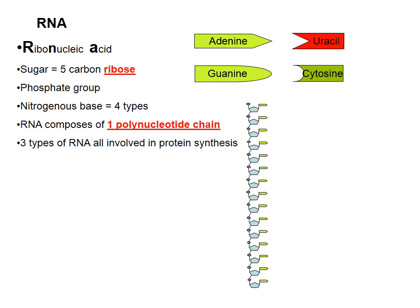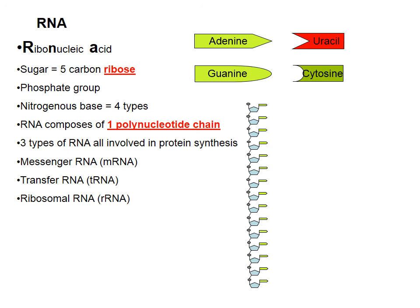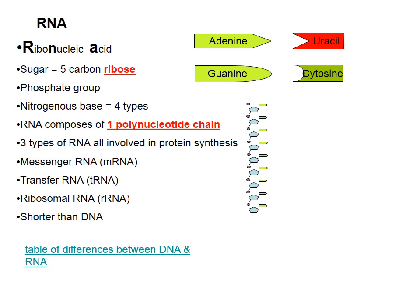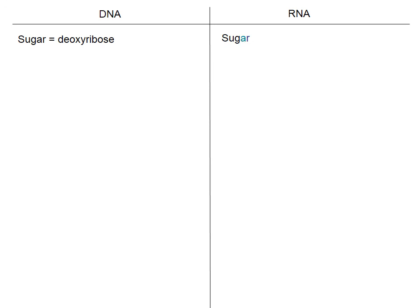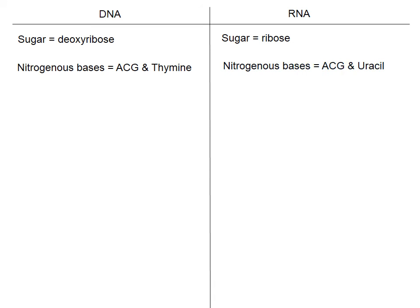There are three types of RNA involved in making proteins. First, mRNA — messenger RNA — which leaves the nucleus from DNA and travels to ribosomes. Second, tRNA — transfer RNA — found in the cytoplasm, to which amino acids are attached. Third, rRNA — ribosomal RNA — found in ribosomes. All three are involved in protein synthesis. RNA is shorter than DNA. The key difference in nitrogenous bases is that there is no thymine in RNA — there's uracil instead.